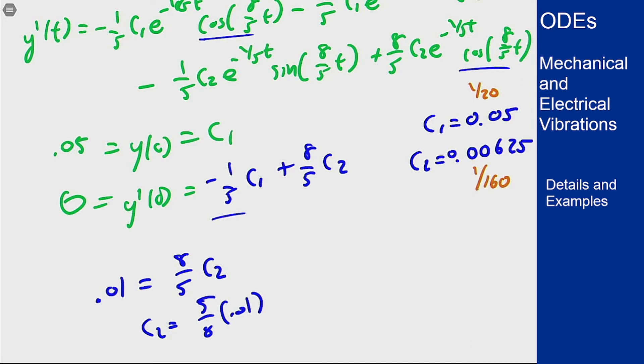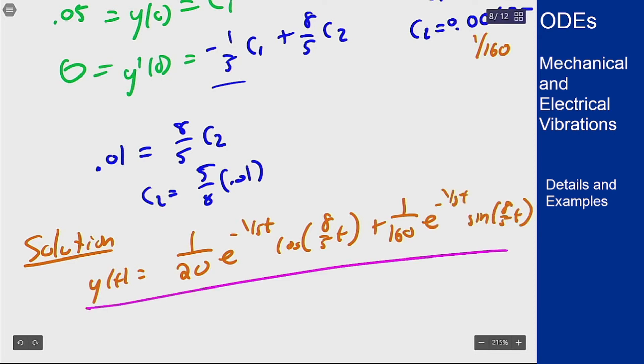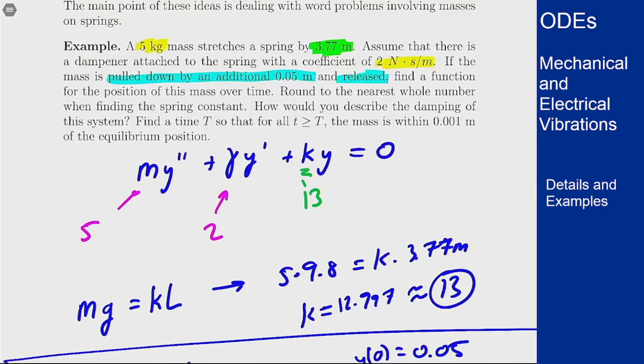So from that we get our solution. y of t is 1 over 20 e to the minus 1 fifth t cosine of 8 fifths t plus 1 over 160 e to the minus 1 fifth t sine of 8 fifths t. Let's go back and see what the problem actually asked us for now. We found a function, good, rounded the whole number, great. The damping of the system: well we're seeing oscillations so because there's oscillation this is an underdamped system.